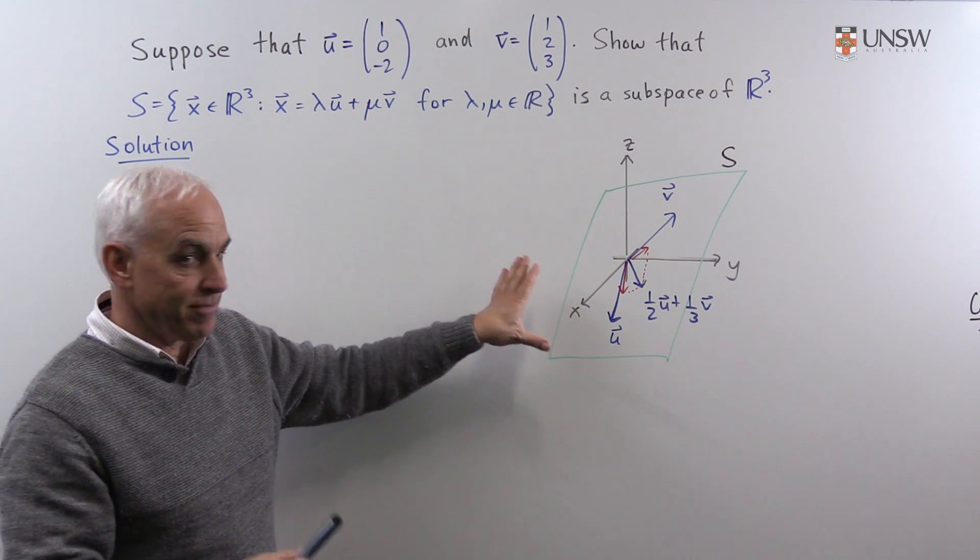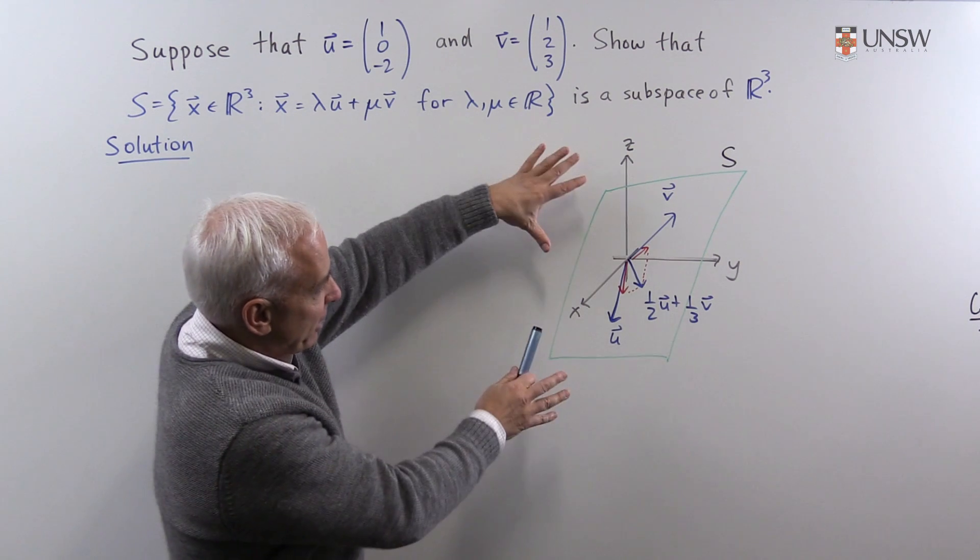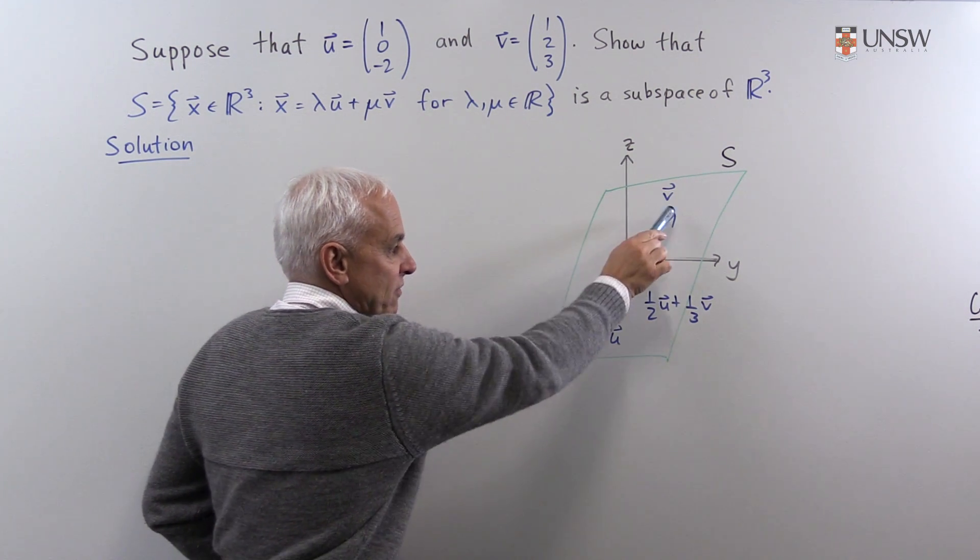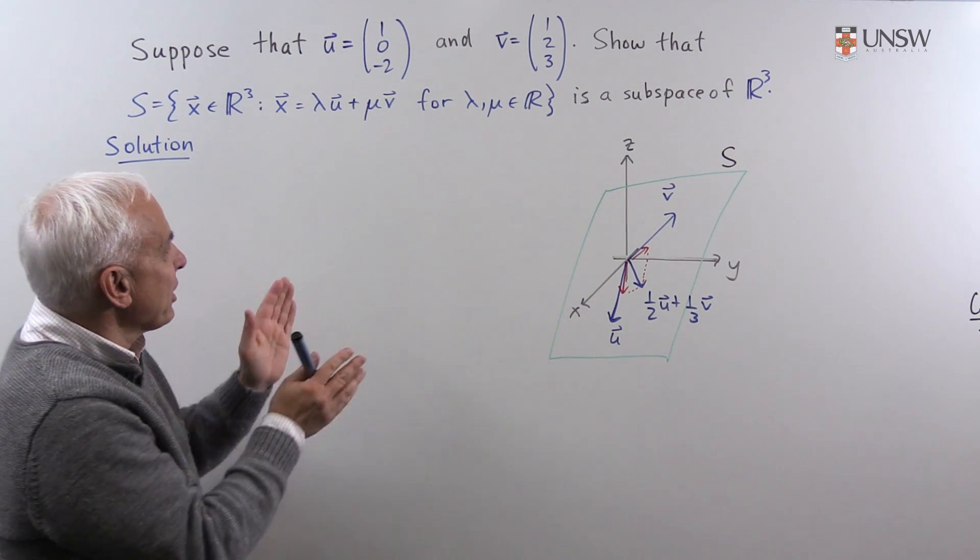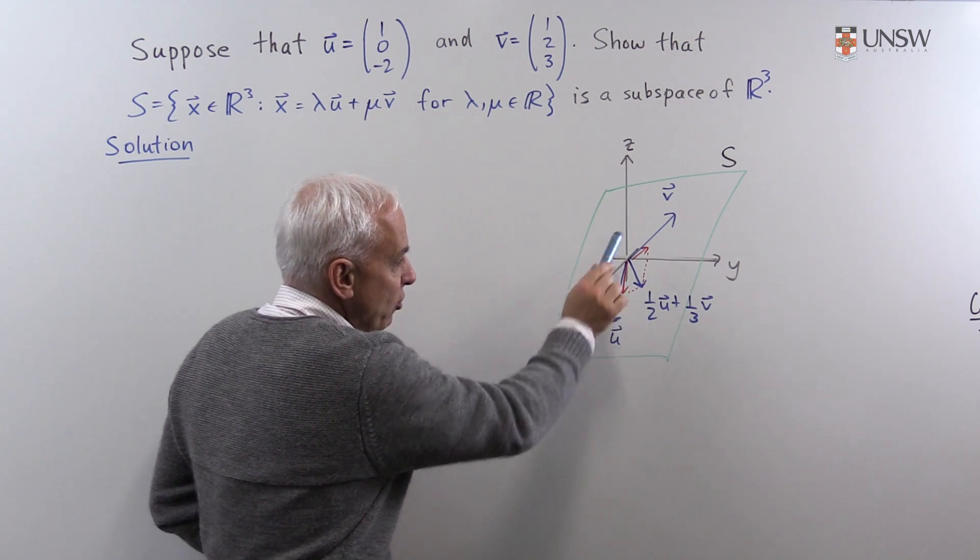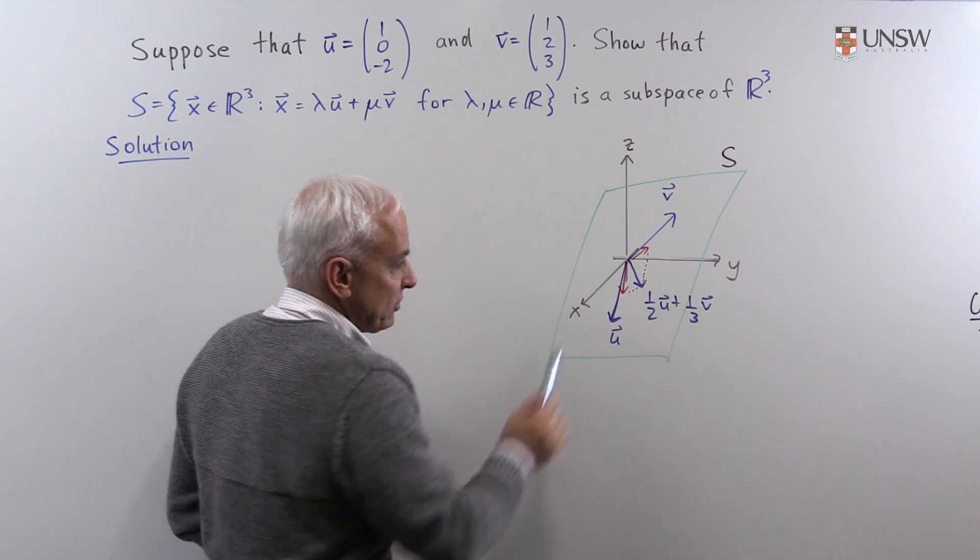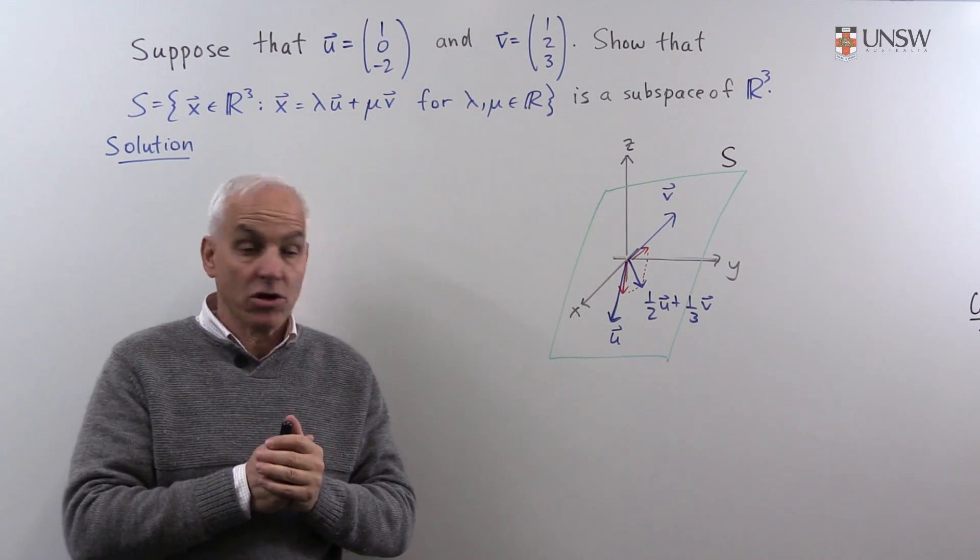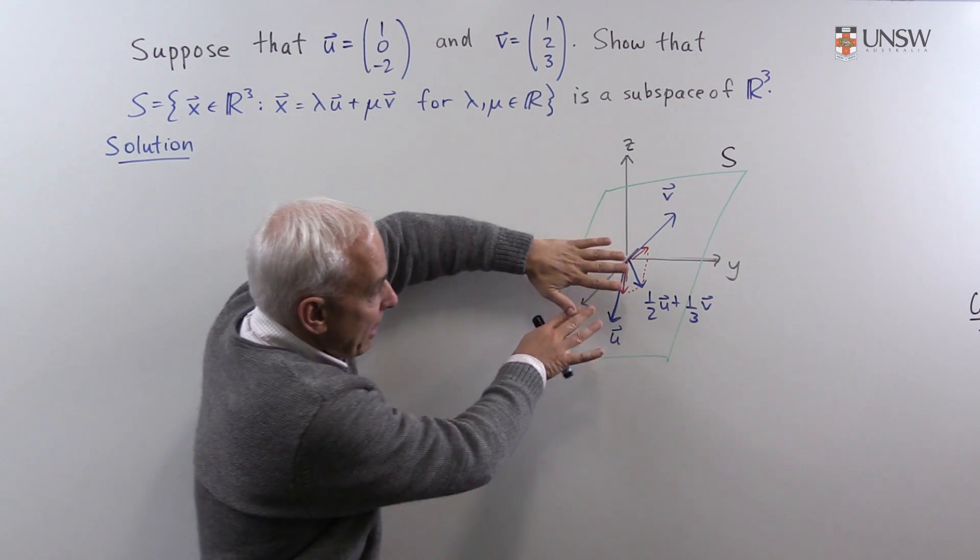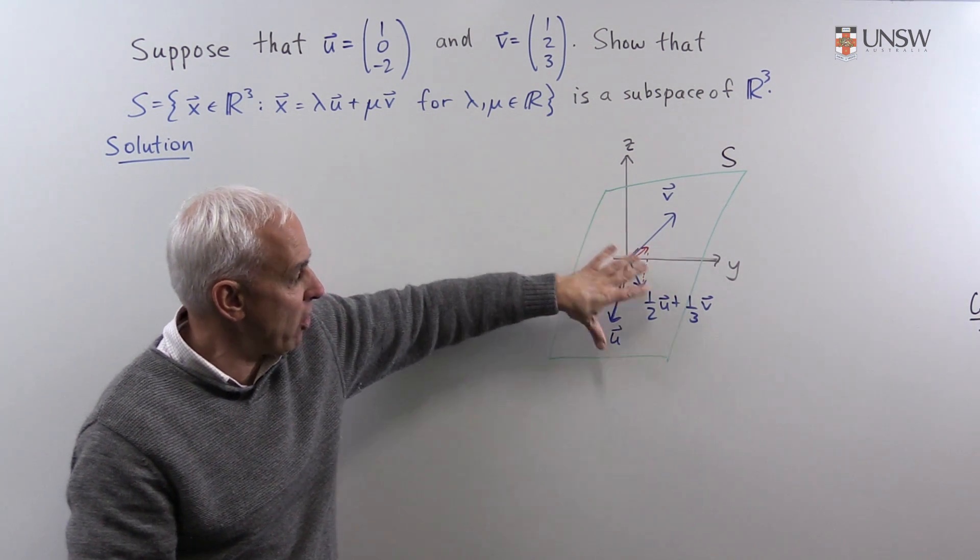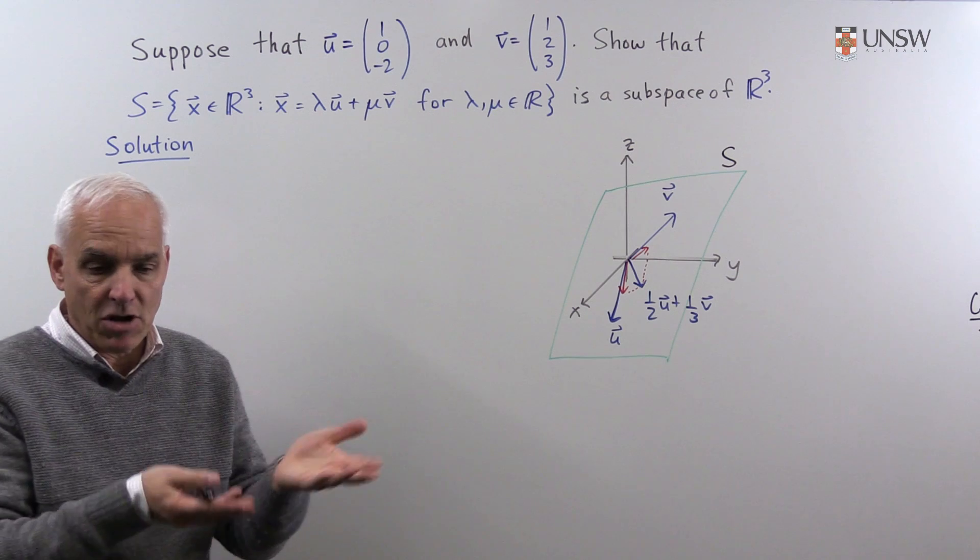Now, geometrically, what that means is, well, here's our three-dimensional space, and here, say, the vector u, and here's the vector v. Now, when we're considering things like this, we're taking linear combinations. For example, 1/2 u plus 1/3 v would be that vector there. And this is the set of all such possible linear combinations, which forms a plane through the origin, containing the two vectors u and v, and all possible combinations of them.